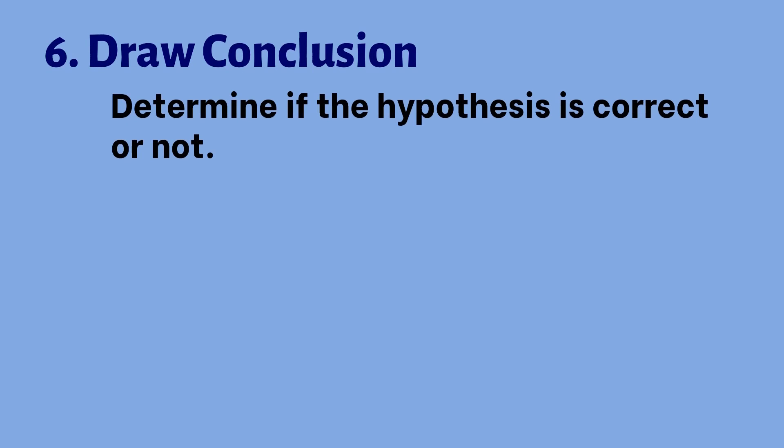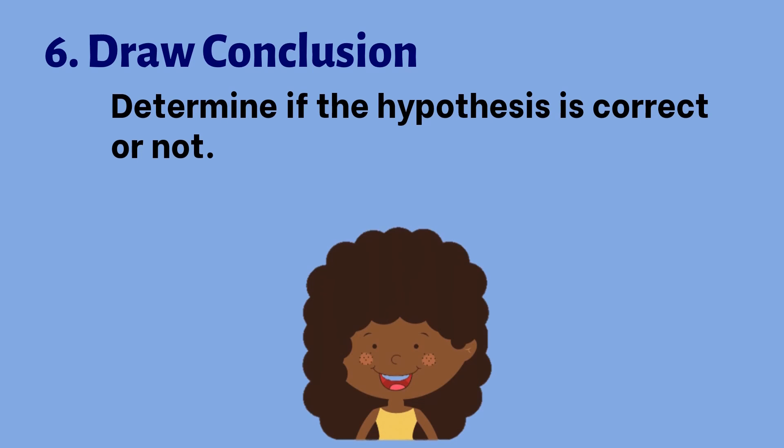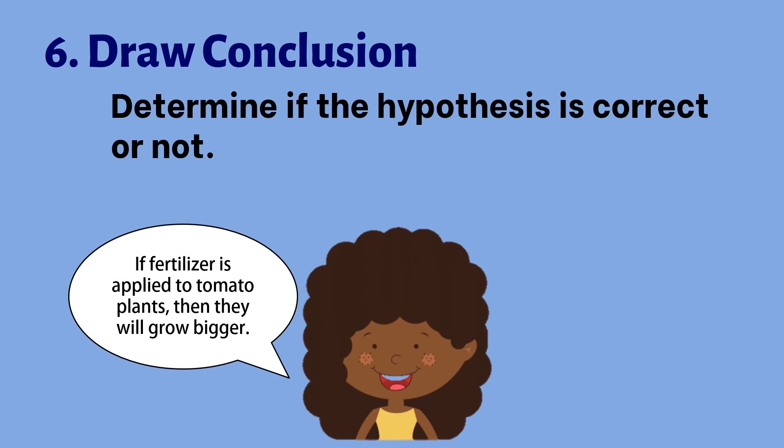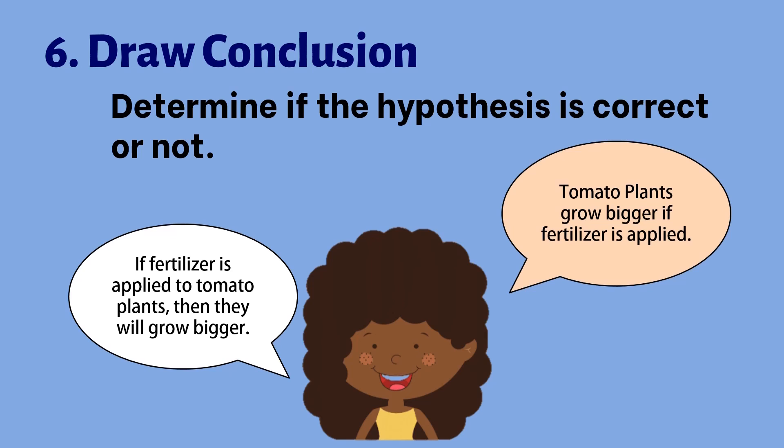The last step is drawing a conclusion. The scientists determine if the hypothesis is correct or not. Betty's hypothesis was: if fertilizer is applied to tomato plants, then they will grow bigger. If it is correct, she will conclude that the tomato plants grow bigger if fertilizer is applied.